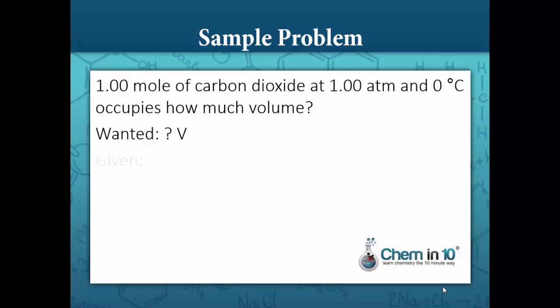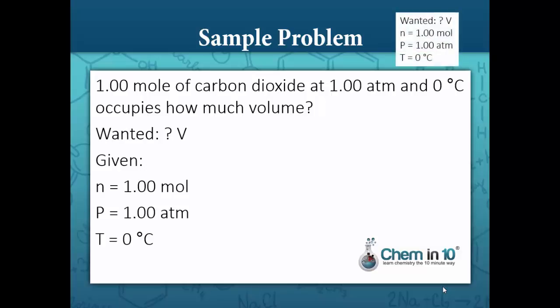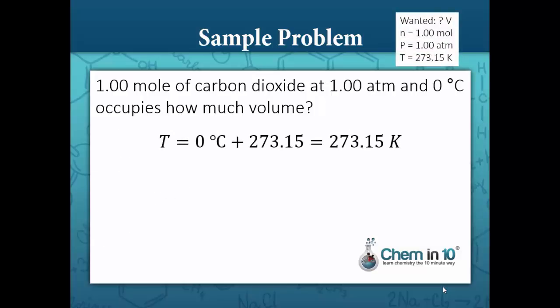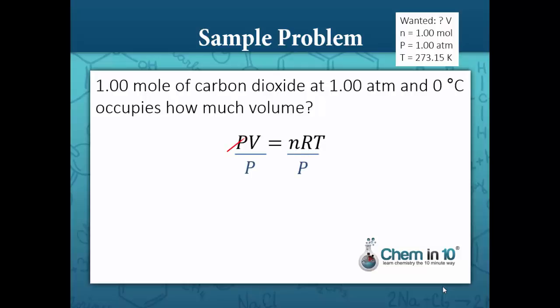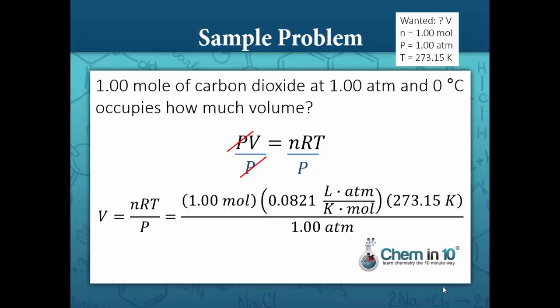So we want volume. We're given 1 mole, 1 atmosphere, and 0 degrees Celsius. Of course we have to convert 0 degrees Celsius to Kelvin — that's 273.15 Kelvin. Our equation is PV equals nRT. We want to solve for volume, so we divide both sides by pressure. Our equation becomes volume equals nRT over P, where n is 1 mole, R is 0.0821 liters atmosphere per mol, temperature is 273.15 Kelvin, and pressure is 1 atmosphere. Moles, Kelvin, and atmospheres all cancel out, and we're left with liters. Our answer is 22.4 liters, which is where we get that number.